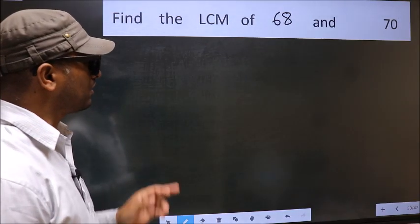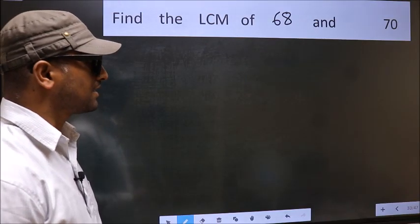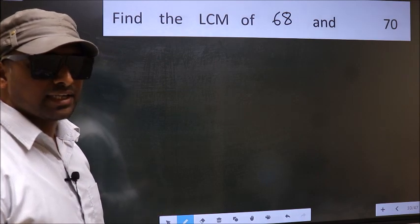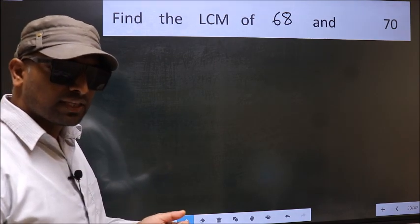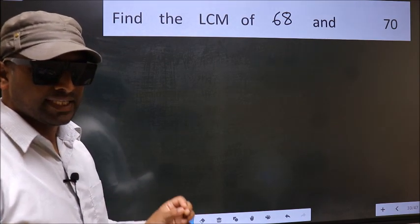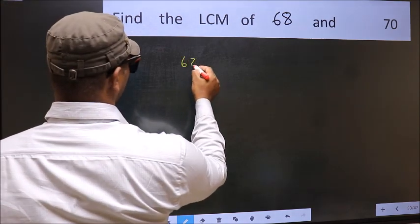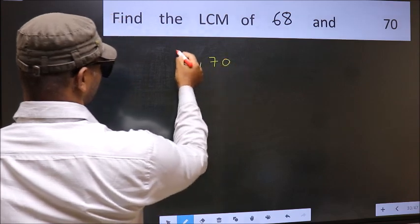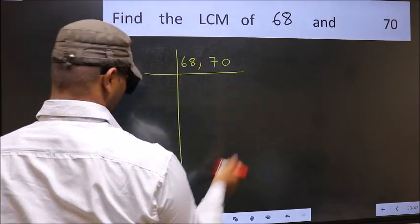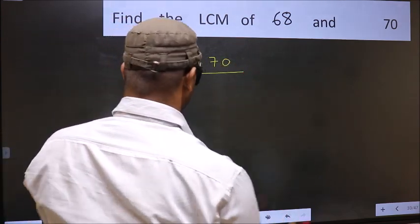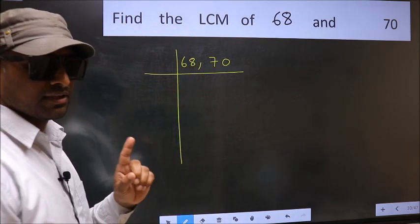Find the LCM of 68 and 70. To find the LCM, we should frame it in this way: 68, 70. This is your step 1.